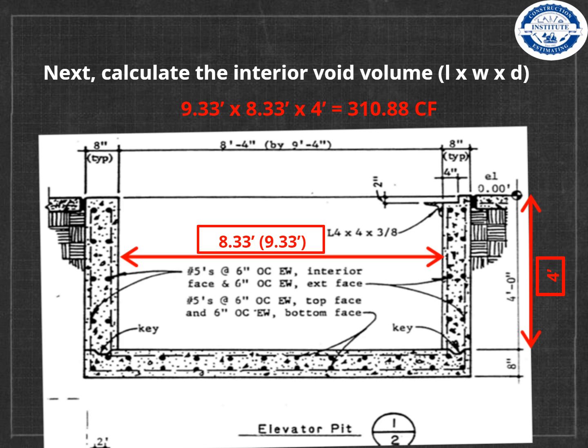Next, calculate the interior void volume. We read off the plans that the interior width is 8 feet 4 inches (8.33 feet). The interior length, in parentheses, is 9 feet 4 inches (9.33 feet). Down the right-hand side, we read that the interior depth is 4 feet.